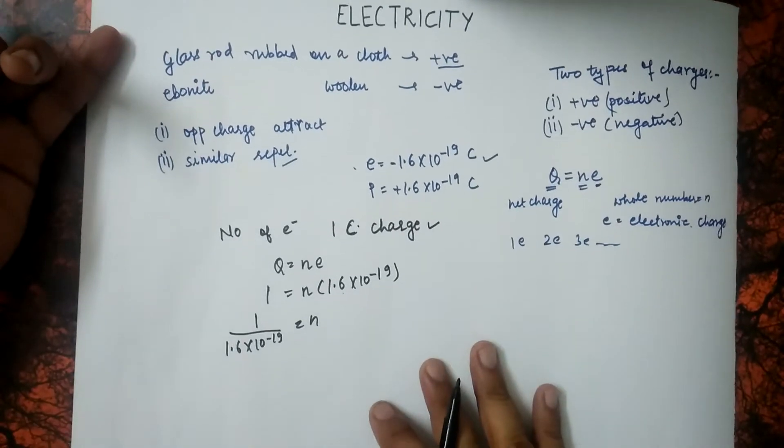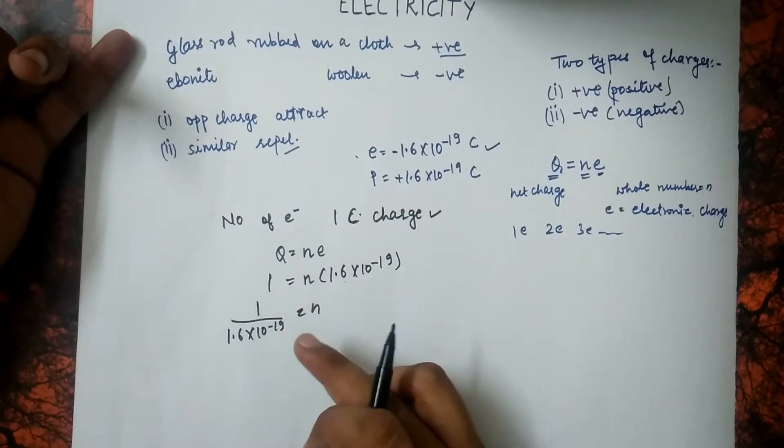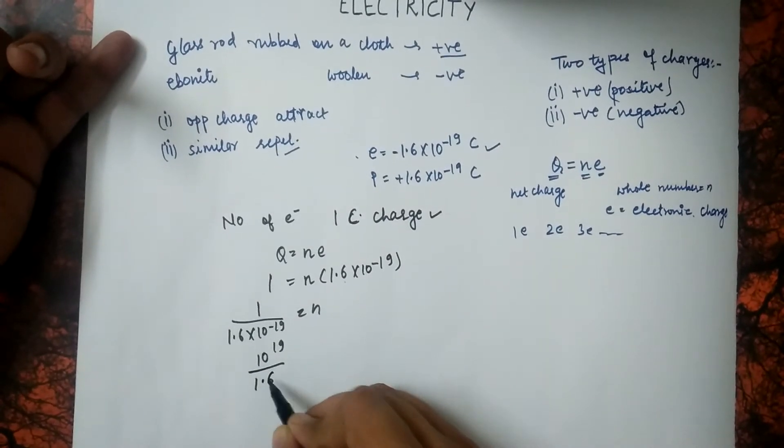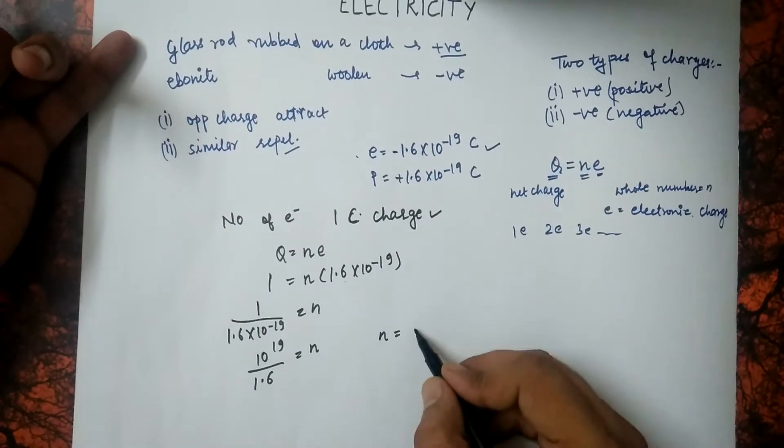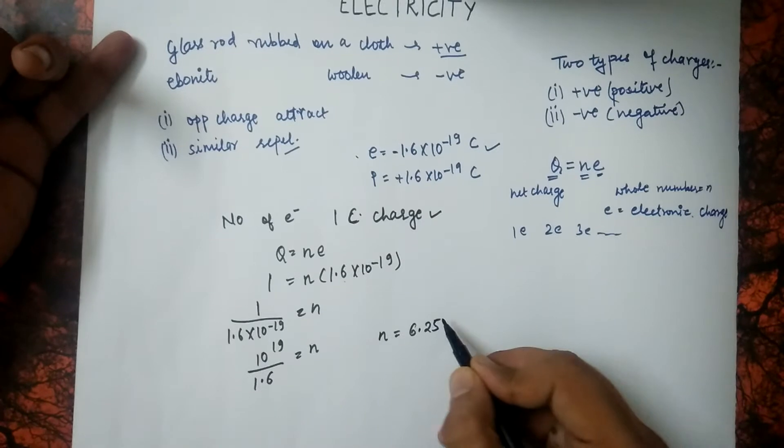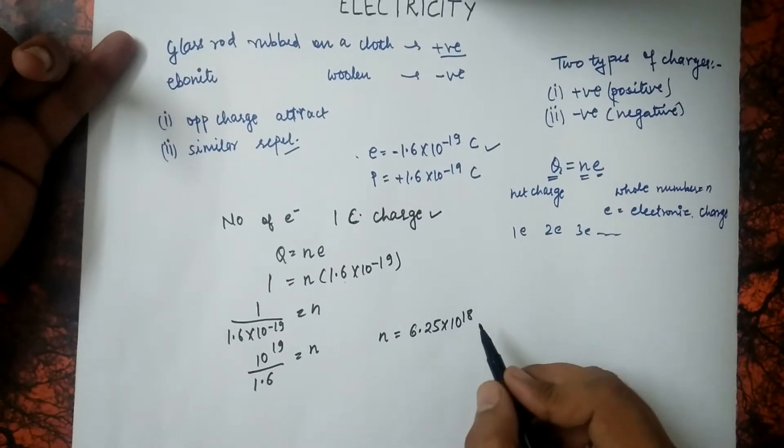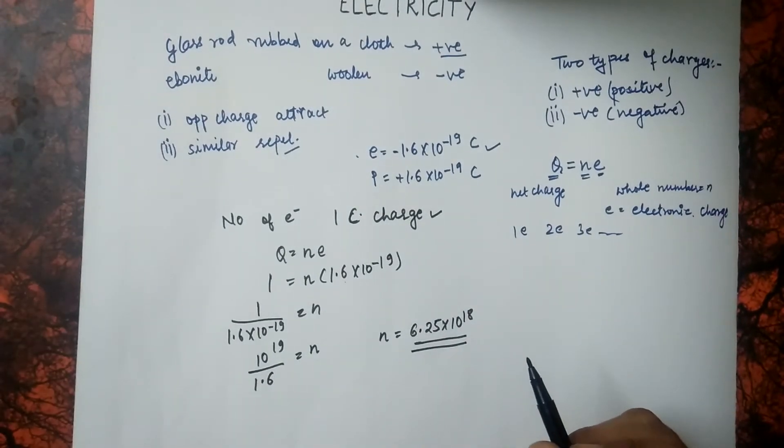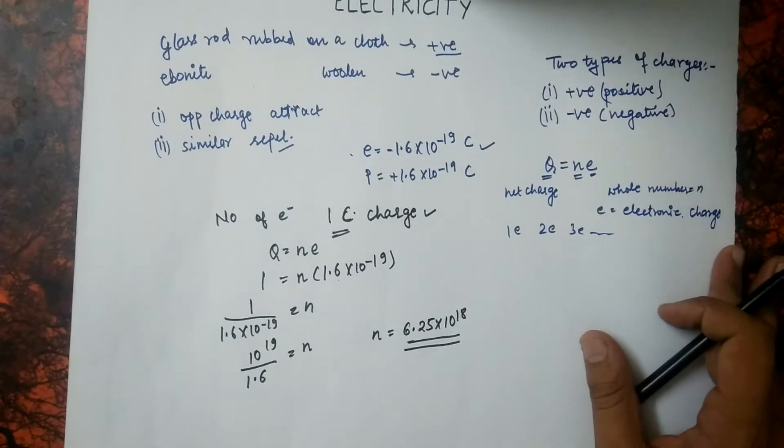Taking minus 19 to the numerator side, we get 10 to the power 19 divided by 1.6 which gives us N. On solving we get N equals 6.25 into 10 to the power 18. So these are the number of electrons which are going to be possessed by 1 coulomb of charge.